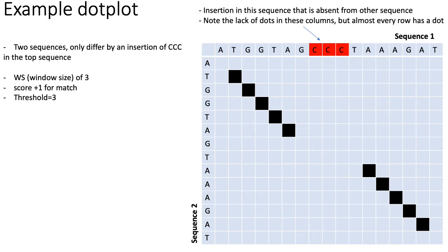On the other hand, looking along the rows, almost every row has a dot, with the exception of a few rows around the boundary of the insertion. The point of this dot plot example is that if two sequences differ only by an insertion, it's easy to see: you'll see whole columns missing dots but most rows having a dot. That means some part of sequence one has no match in sequence two, but every part of sequence two has a match in sequence one — telling you there's an insertion in sequence one.